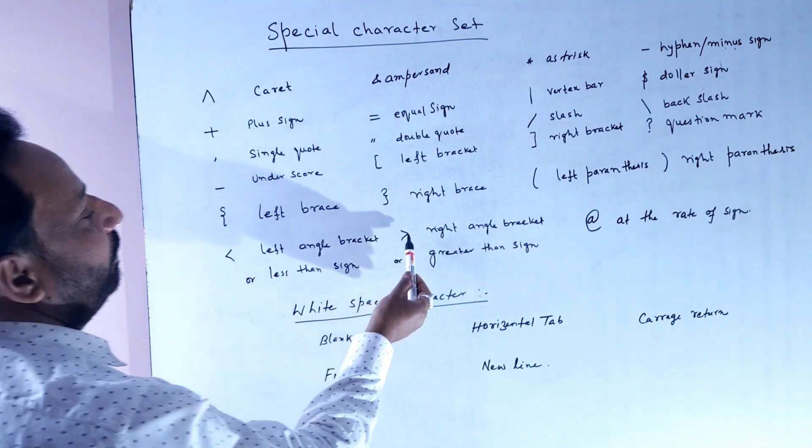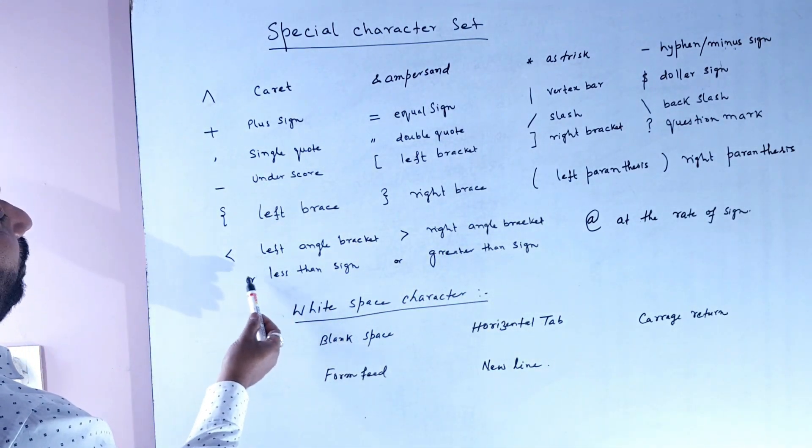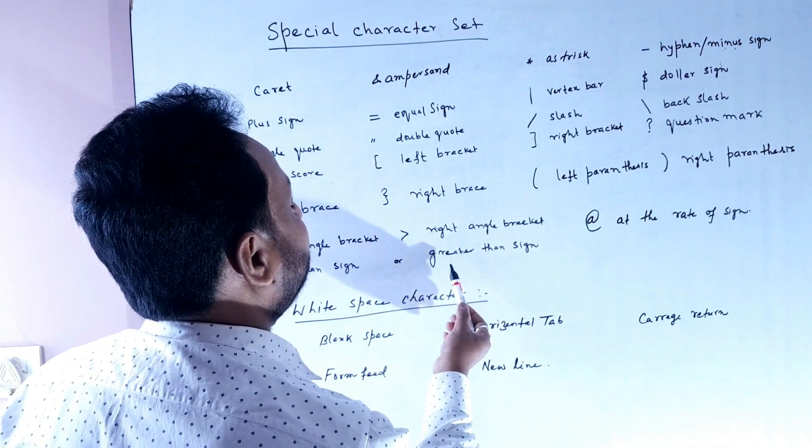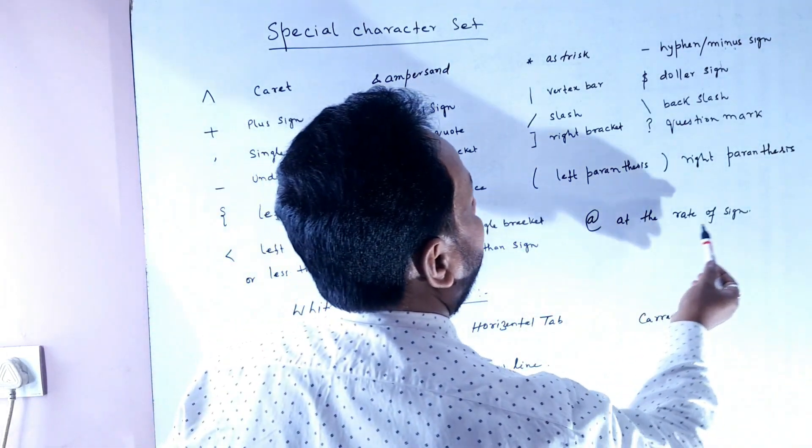Left angle bracket, right angle bracket. The left angle bracket is also known as less than sign and right angle bracket is also known as greater than sign. This is the at-rate sign.